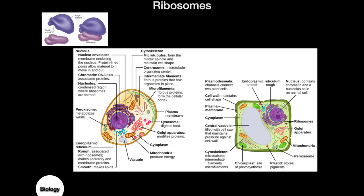Ribosomes may also be associated with the endoplasmic reticulum — specifically the rough endoplasmic reticulum. These little red dots on the outside show the attached ribosomes, and you may also see smaller ones that are free-floating throughout the cytoplasm. So you have ribosomes that are free-floating in addition to ribosomes attached to the rough endoplasmic reticulum.